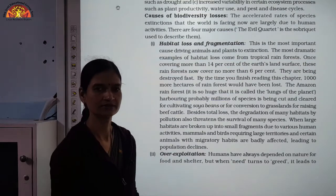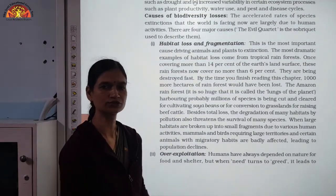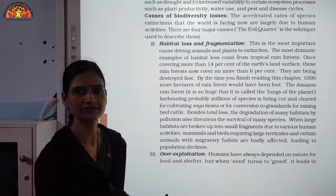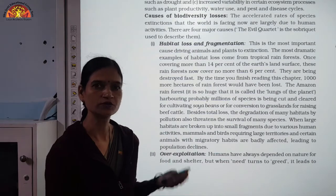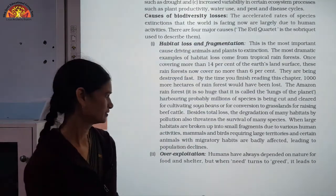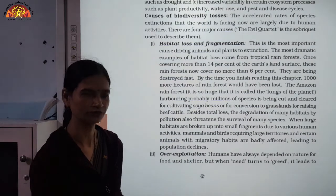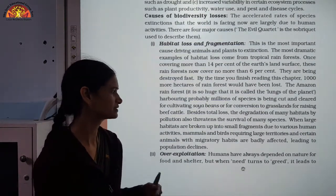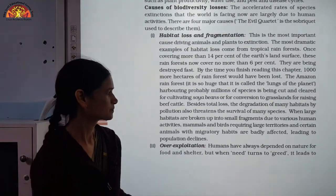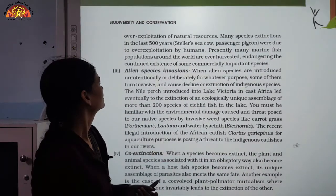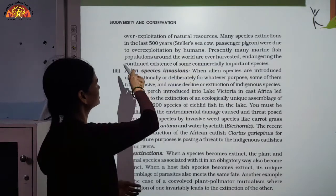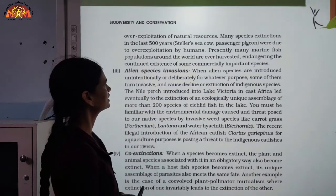The second cause is over-exploitation. We know that we need to use forest products — trees, medicines, everything. But there should not be over-exploitation; we should use them in proper amounts. Humans have always depended on nature for food and shelter, but when needs turn to greed, it leads to over-exploitation, which is always harmful.